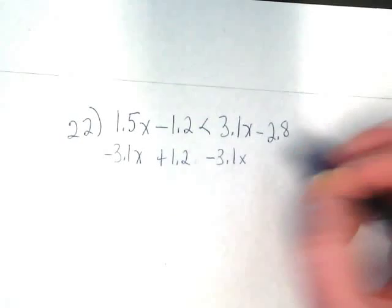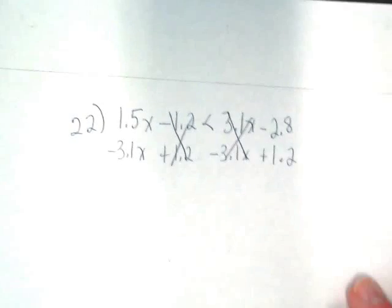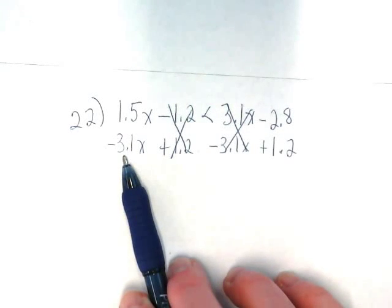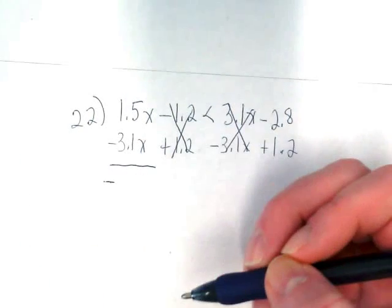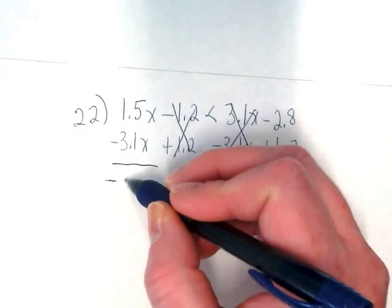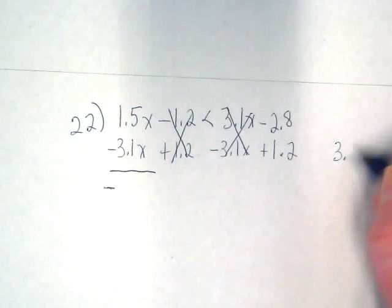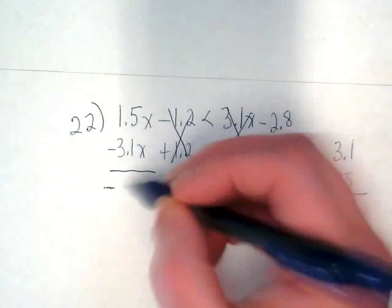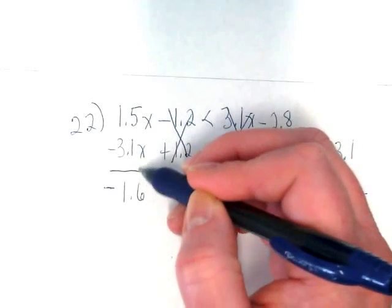I'm going to add the opposite of one and two tenths and get it over here, cancelling this, cancelling this. And if I do 1.5 minus 3.1 what am I going to end up with? A negative. Is it 1.4? I got negative 1.6. It is going to be 1.6, which makes sense because 1.5 plus 1.5 would be 3 and this is 1 tenth over 3 right?